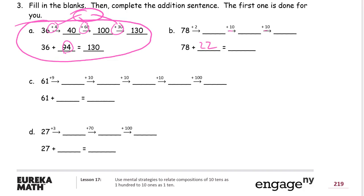And let's see, seventy-eight plus two, that's eighty. Eighty plus ten, that's ninety. And ninety plus ten, that's a hundred. Seventy-eight plus twenty-two is a hundred. That's it.